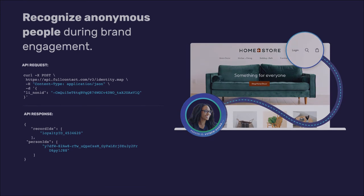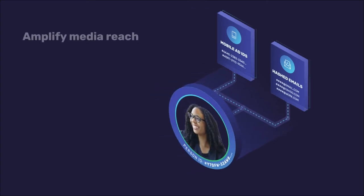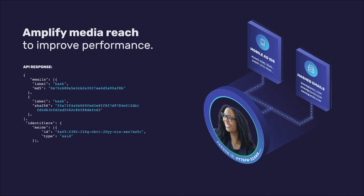Ensuring HomeStore can reach Jessie whenever she engages, Full Contact sends an average of five hashed emails and mobile advertising IDs in real-time. A private marketplace can be created so a demand-side platform can deliver media to Jessie across the open web, all tied to her persistent Person ID.